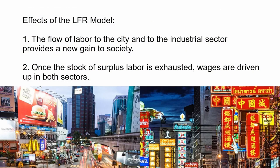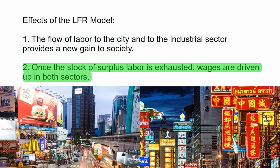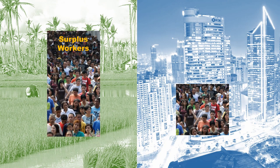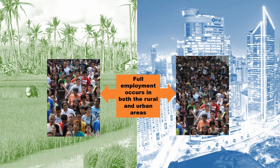Rural to urban migration will ultimately benefit society, and once the stock of labor is exhausted, wages are driven up in both sectors. So the excess workers from the rural areas begin to migrate to urban areas, filling the demand for workers in the growing urban economy. The migration of these surplus workers creates a sort of equilibrium in both the rural and urban areas in terms of employment.